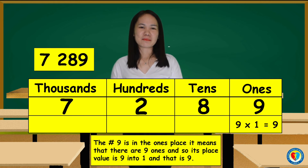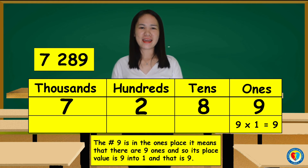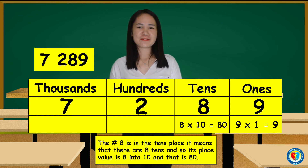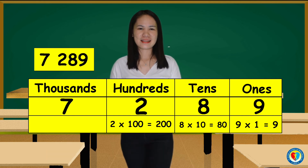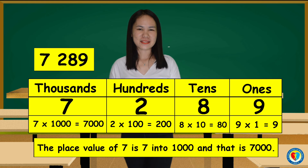The place value of 9 is 9 into 1, and that is 9. The place value of 8 is 8 into 10, and that is 80. The place value of 7 is 7 into thousands, and that is 7 thousands.